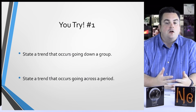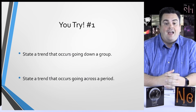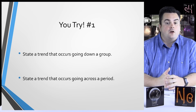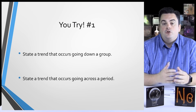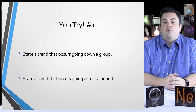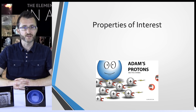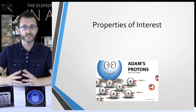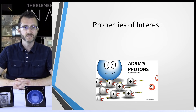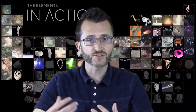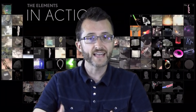State a trend that occurs going down a group and state a trend that occurs going across a period — don't use one of the examples from the previous slide. We're going to define three terms and then later look at the trends they exhibit on the periodic table. These three terms are so important they come up in later units. We're really devoting this entire lesson to these three properties, so make sure you understand them.